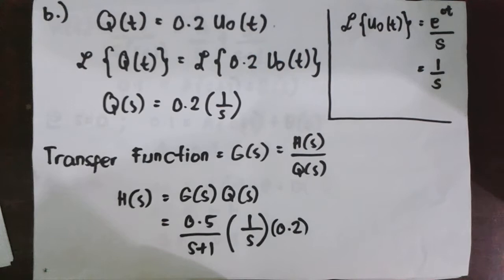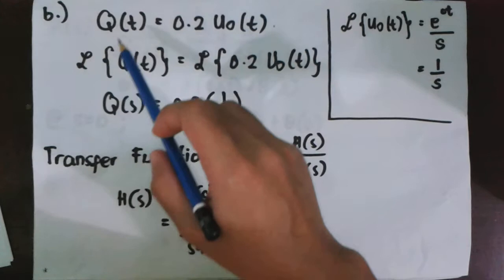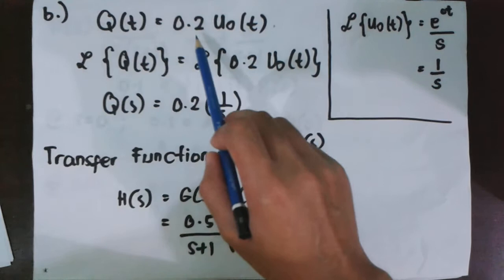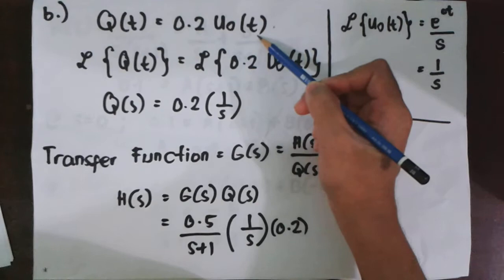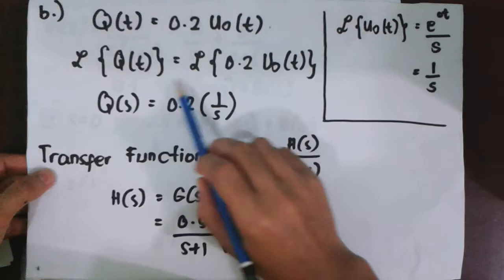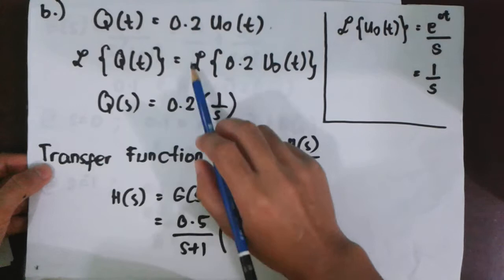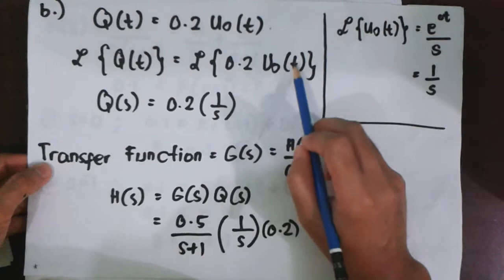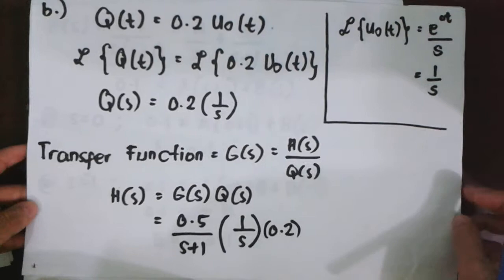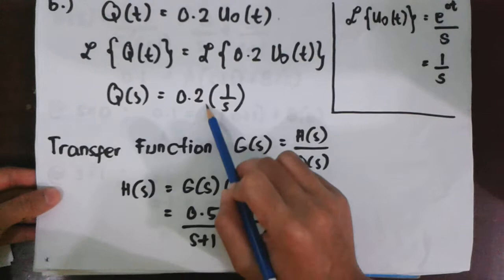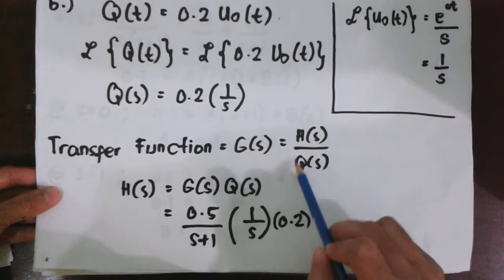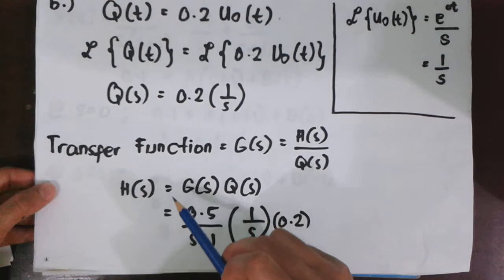For the second question, we are asked to calculate the level 2 minutes after the change occurs, given that the flow increased from 2.0 to 2.2 cubic feet per minute. Given a step function, the input disturbance is written as 0.2 times Uo(t). Taking the Laplace transform of this equation, the Laplace transform of Q(t) is Q(s). And then, the Laplace transform of 0.2 times Uo(t) is 0.2 over s.